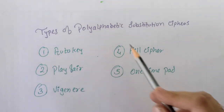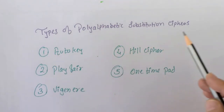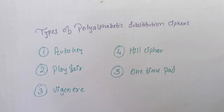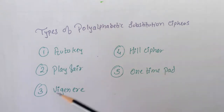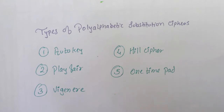The types of polyalphabetic substitution ciphers we will see are: auto key, Playfair, Vigenère cipher, Hill cipher, and one-time pad.